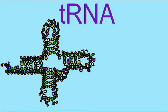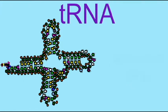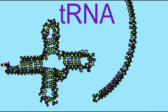Once a tRNA has bound an amino acid, it must be capable of transferring it to the appropriate spot in a developing peptide. This, then, is the function of the anticodon loop. The anticodon loop has three nucleotides which will recognize codons on the mRNA because of complementary base pairing. Therefore, this amino acid will only be inserted in the appropriate spot of the growing chain that the mRNA specifies.